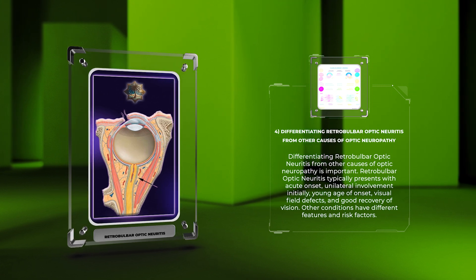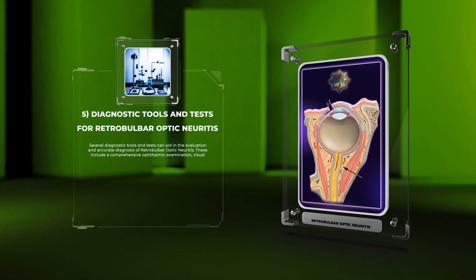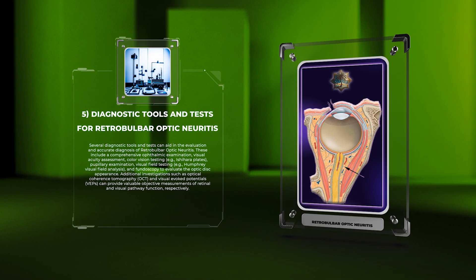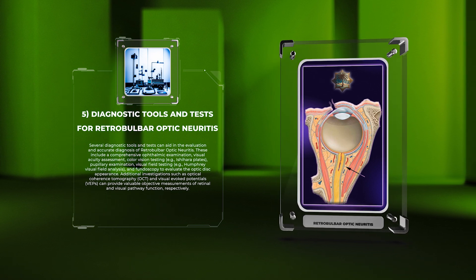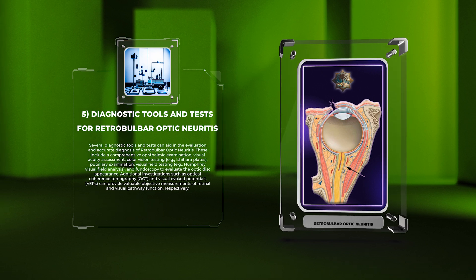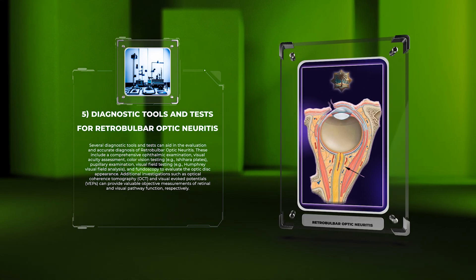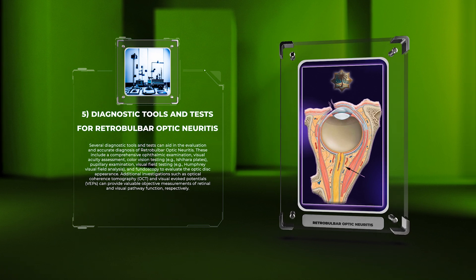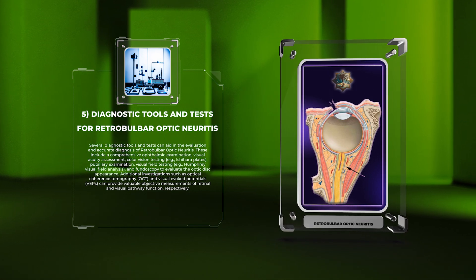Several diagnostic tools and tests can aid in the evaluation and accurate diagnosis of retrobulbar optic neuritis. These include a comprehensive ophthalmic examination, visual acuity assessment, color vision testing (for example, Ishihara plates), pupillary examination, visual field testing (for example, Humphrey visual field analysis), and fundoscopy to evaluate the optic disc appearance.